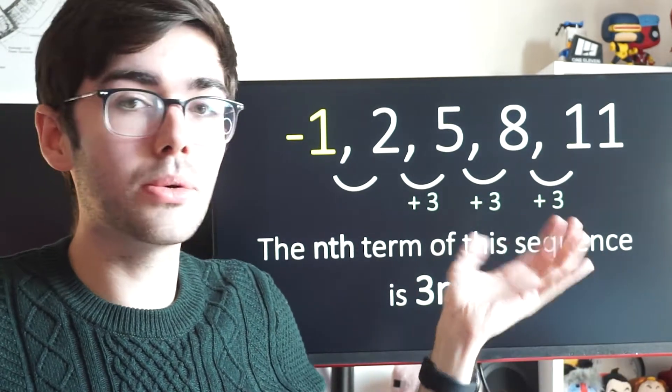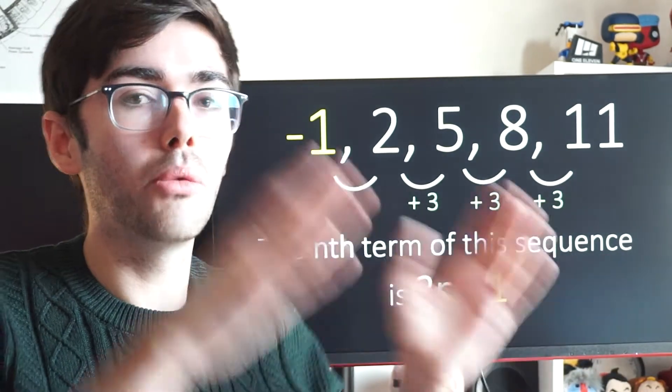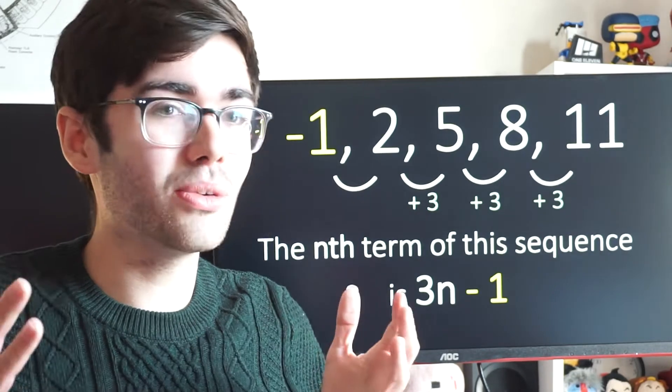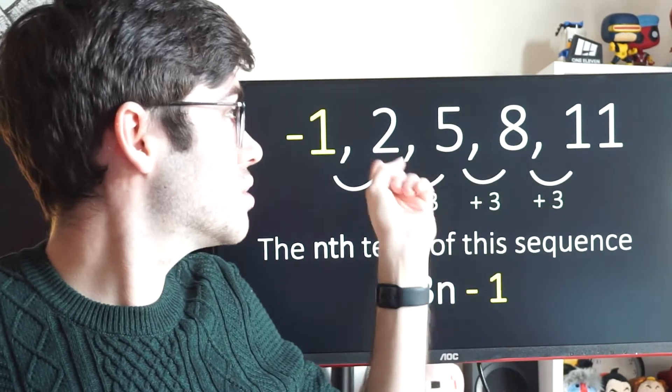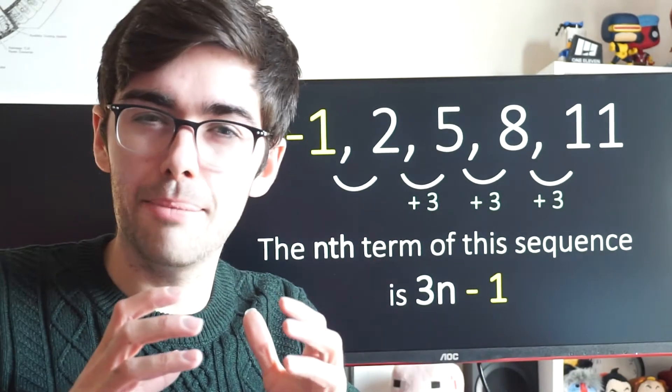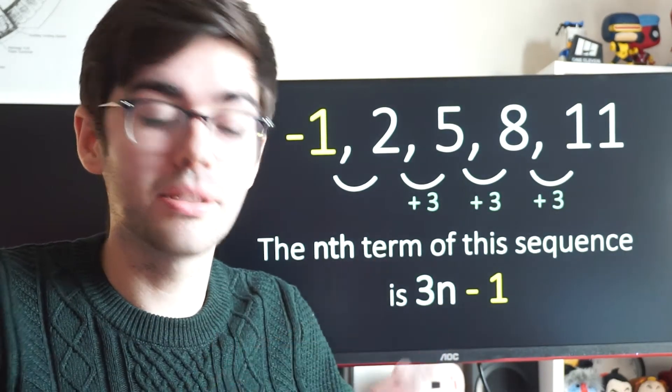What that means is, this sequence is the 3 times table, but one place behind. So where the 3 times table would go 3, 6, 9, 12, this goes 2, 5, 8, 11. It's always one step behind, but it's still going up in 3s.